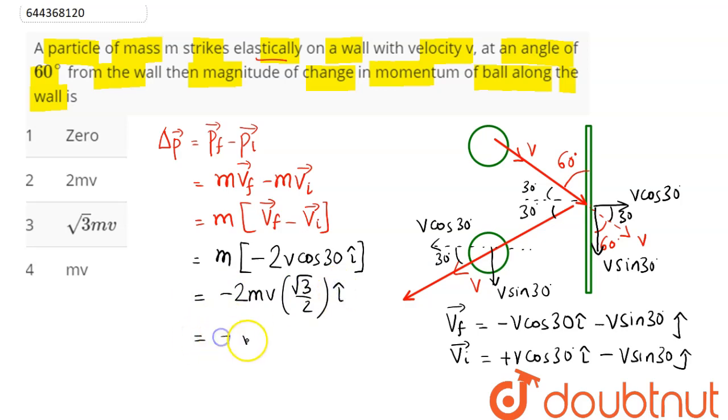So this comes as minus root 3 MV I cap. Now the question is asking magnitude of change of momentum of wall along the wall. This momentum change here is along I cap direction, that is along perpendicular to the wall.